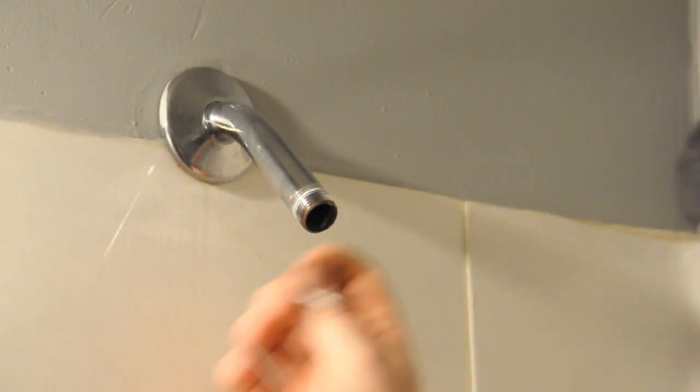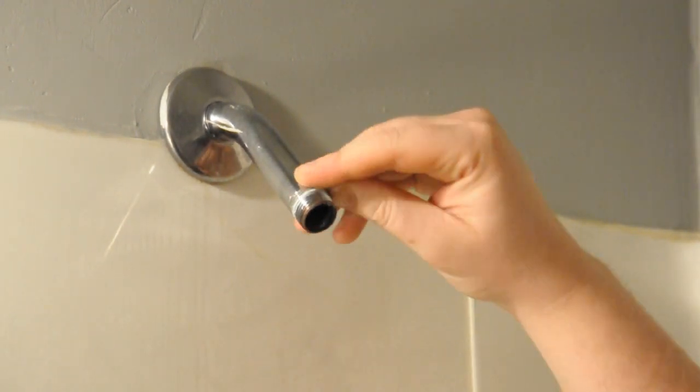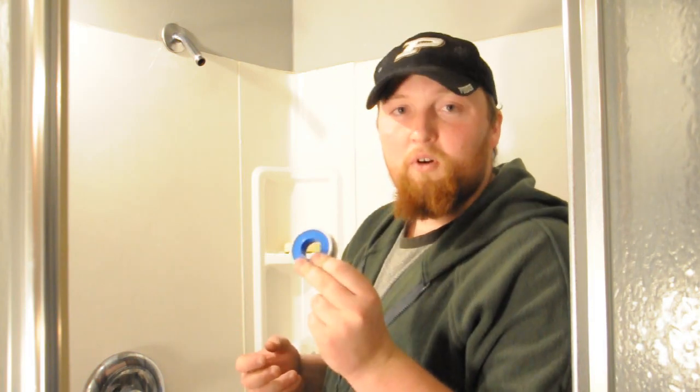Now that the shower fixture is off, we're going to go ahead and remove all the plumbers tape or Teflon tape that remains. The next step is to reapply some new plumbers or Teflon tape.